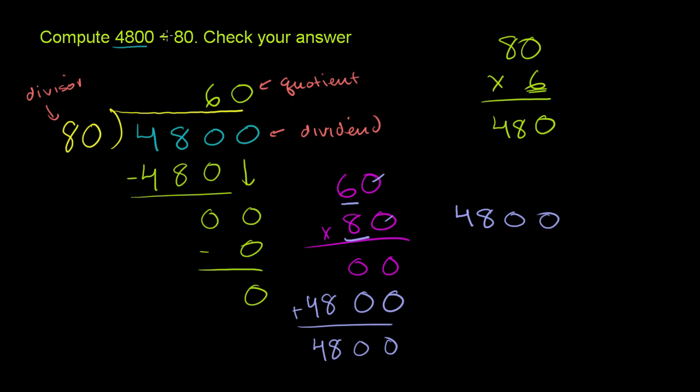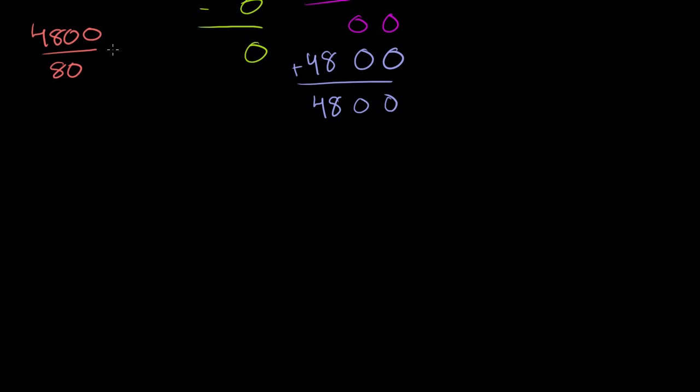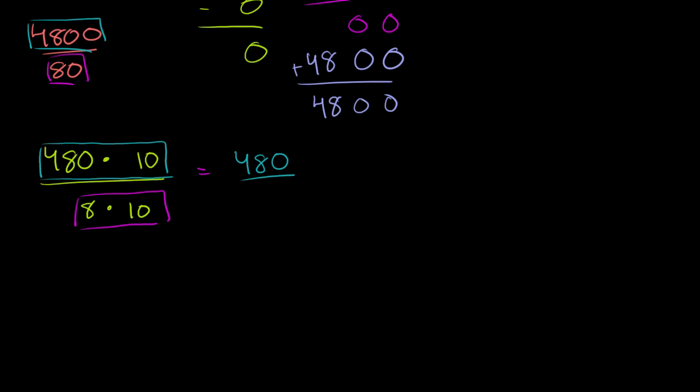Now, a quick way to have thought about 4,800 divided by 80 is to divide both of these numbers by 10 first. And just to think about it this way, what we're doing, this could be written as 4,800 over 80. Or this could be written as 480 times 10 over 8 times 10. 4,800 is just 480 times 10, and 80 is just 8 times 10. Now what happens here? We could view this as being equal to 480 over 8 times this 10 up here, divided by this 10. Now what's 10 divided by 10? What's any non-zero number divided by itself? Well, this is just going to be 1. 10 goes into 10 one time. So we're just left with 480 over 8.